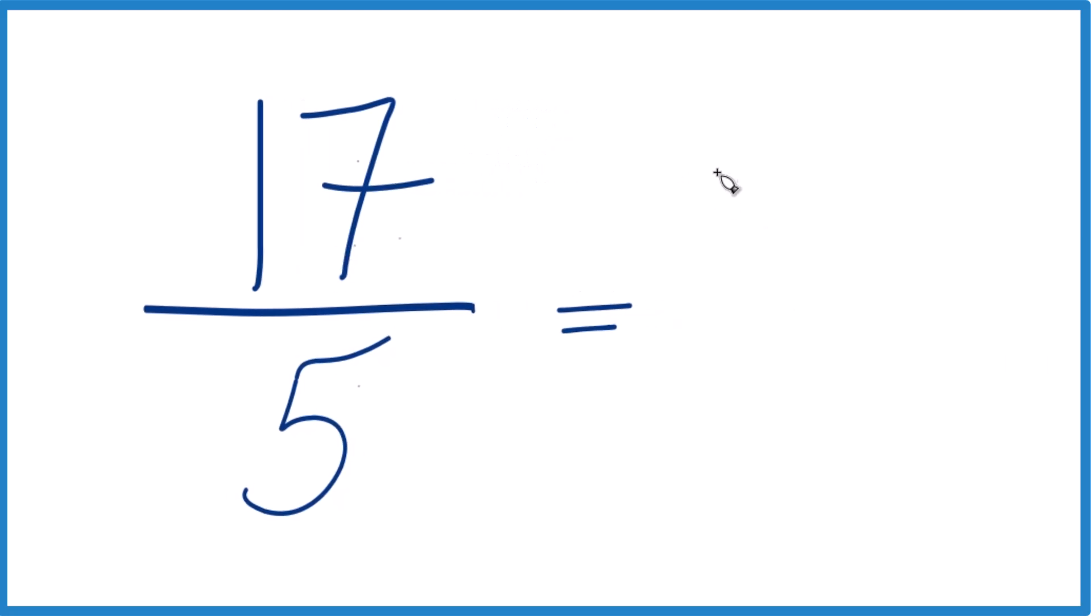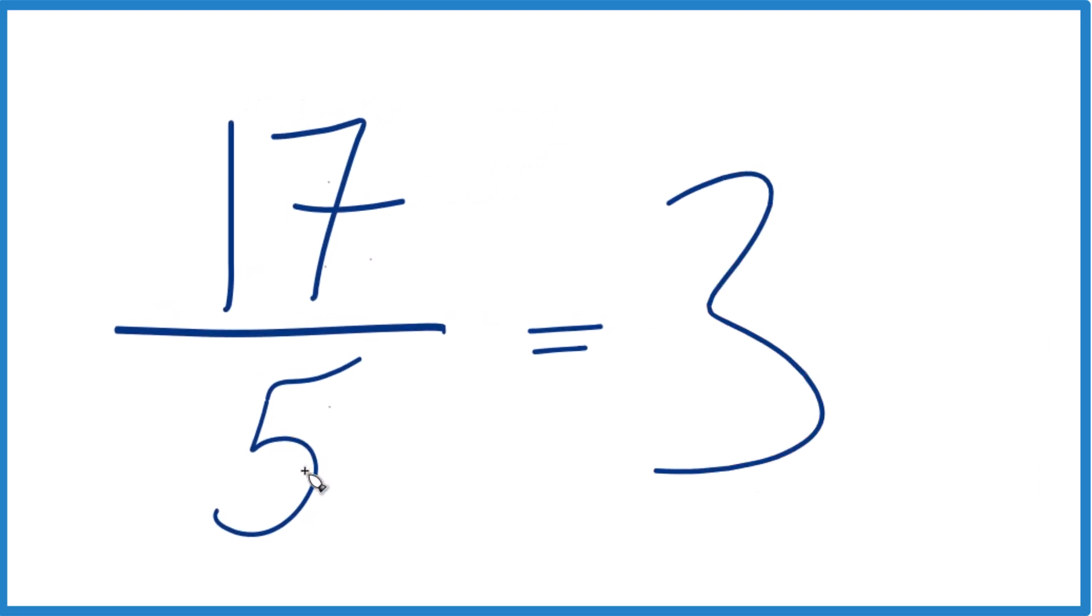5 goes into 17 three times. 3 times 5 is 15, with 2 left over. We bring the 5 across, and 17 fifths equals the mixed number 3 and 2 fifths.